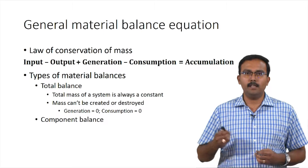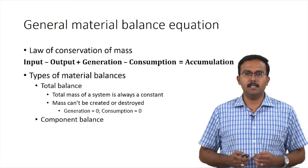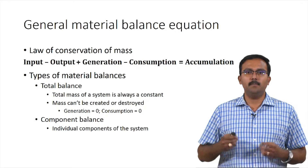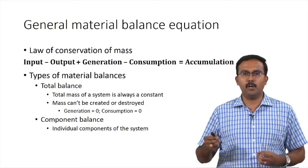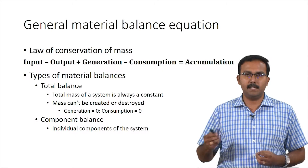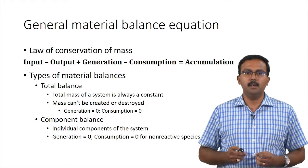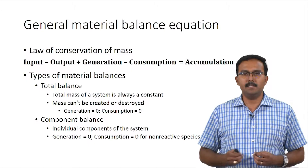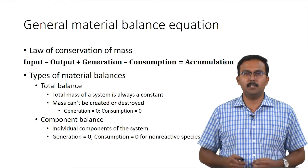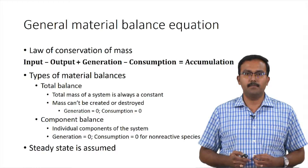You can also write component balances. Component balances are written for the individual components present in the system. Here, generation and consumption will be zero for non-reactive species.